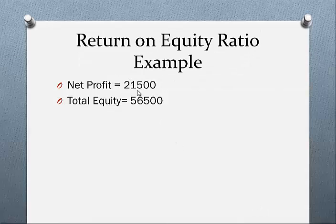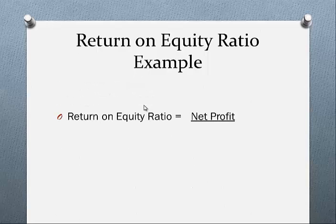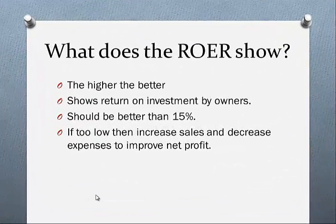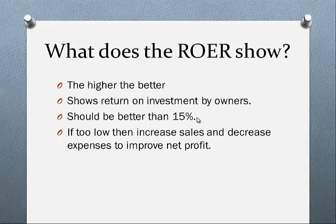Now let's do the calculation. Net profit is $21,500, total equity is $56,500. Applying the formula — net profit over total equity: 21,500 ÷ 56,500 = 0.38053, multiplied by 100 gives a return on equity of 38.1%. The higher the better — it shows return on investment for owners, with 15% as a benchmark. Anything above that and you're doing okay. If it's too low, we need to increase sales and decrease expenses to improve net profit.